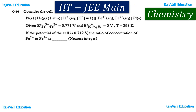In this question, the cell representation or cell notation is given, along with E⁰ for Fe³⁺/Fe²⁺ and E⁰ for the half-cell H₂/H⁺. The potential of the cell is also given. The question asks: what is the ratio of concentration of Fe²⁺ to Fe³⁺?